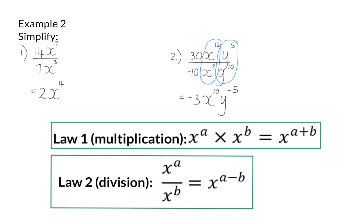So now we have two laws. When multiplying by the same base, we add our exponents, and when we divide with the same base, we subtract the exponents.